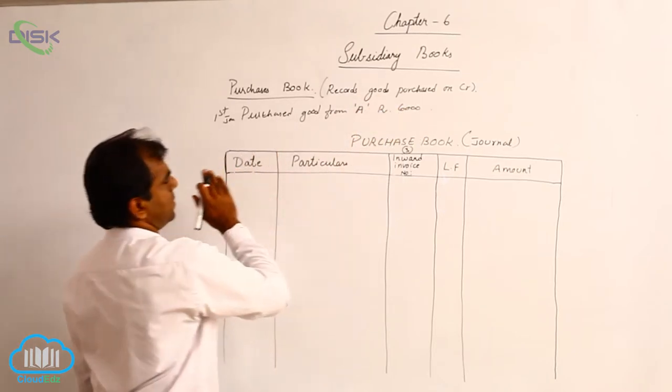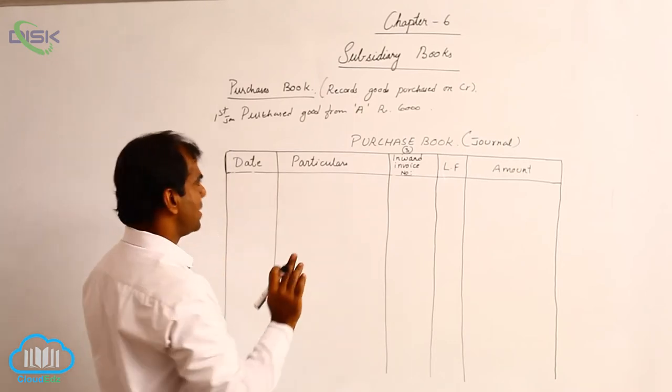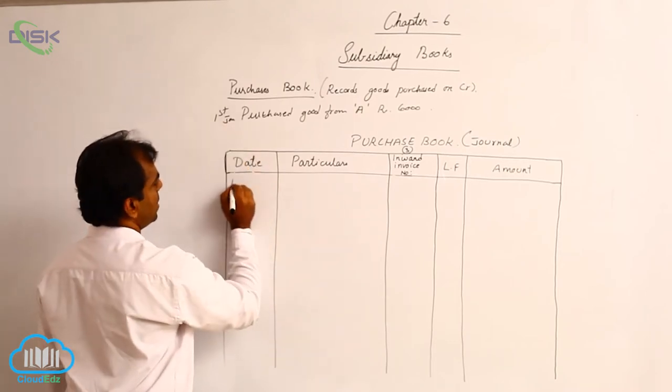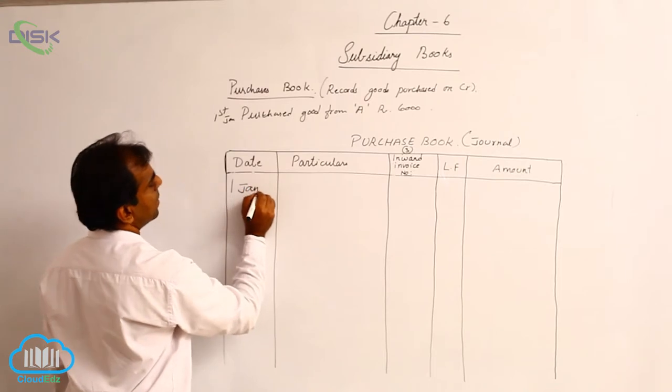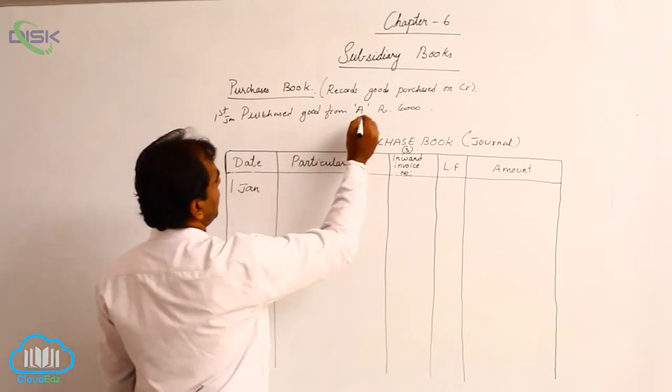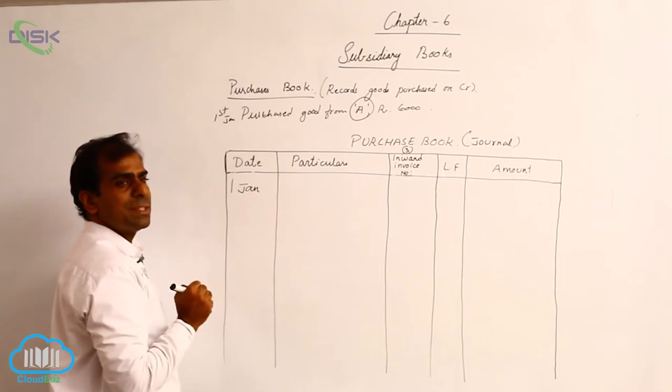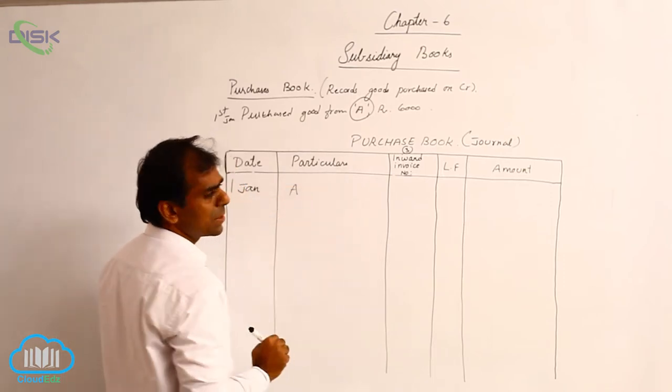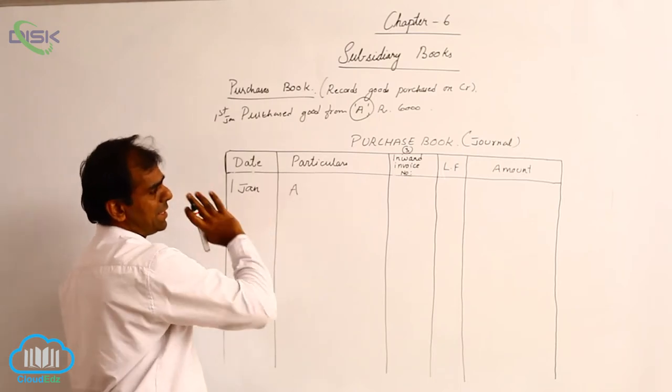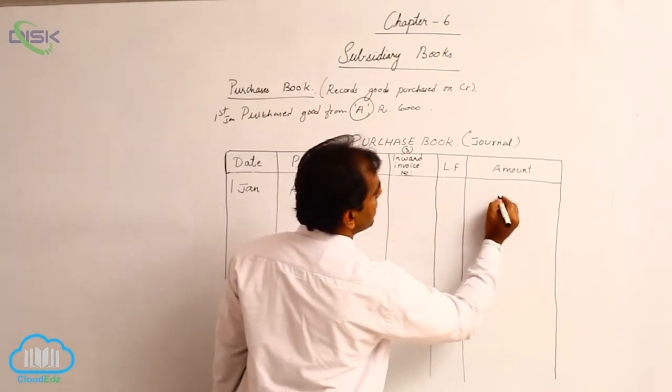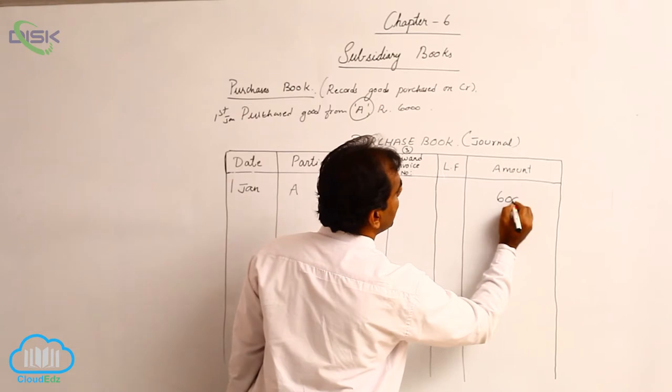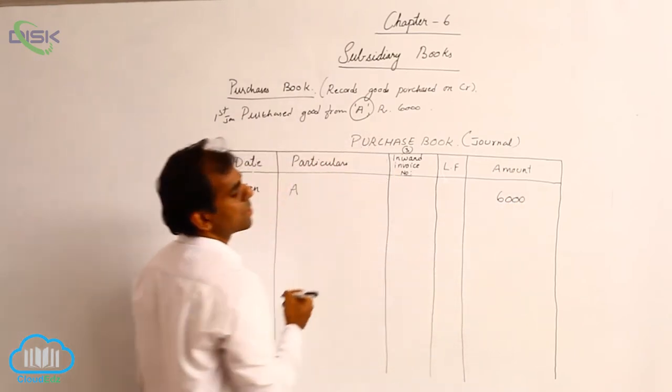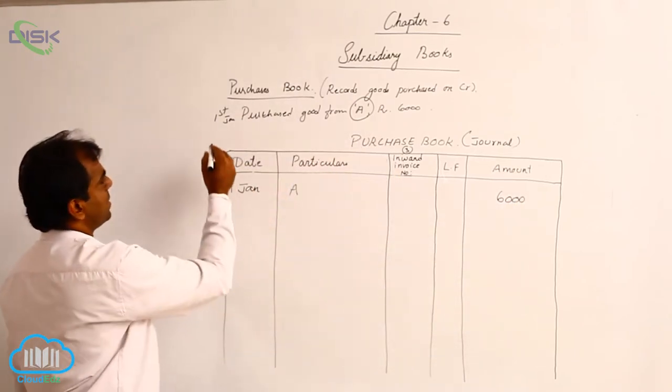So what simply I have to do is mention the date in date column. So the date is 1st January. Then just mention the name of the person from whom you purchased the goods in particulars column. Here we have taken it as A. And simply enter this amount in amount column.